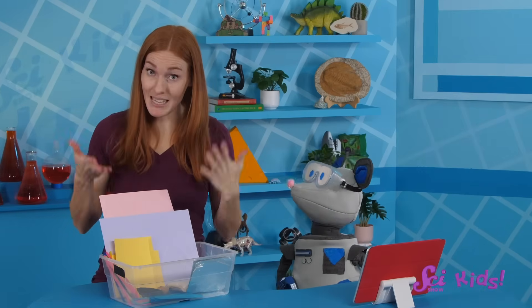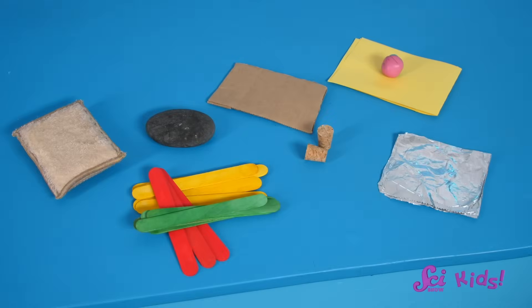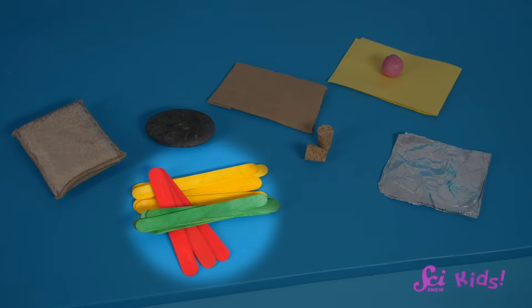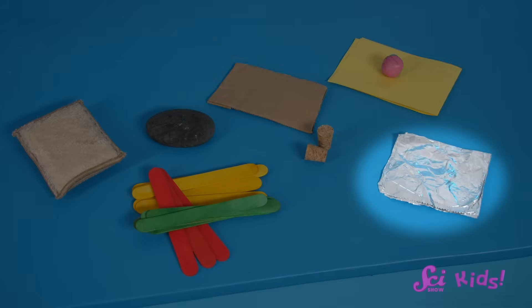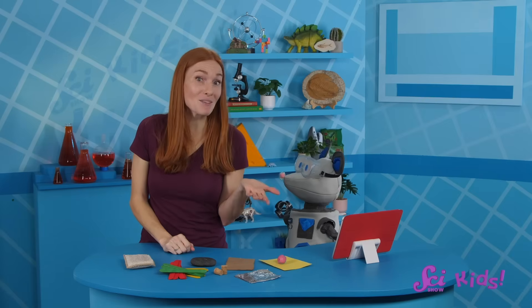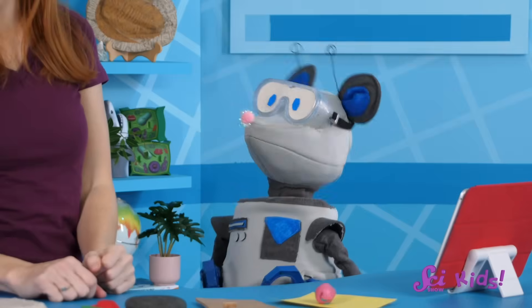Let's take a good look at our materials and then draw designs for our rafts. We have a kitchen sponge, some craft sticks, cardboard paper, a ball of modeling clay, some aluminum foil and corks, and a big flat rock. Let's think about these materials and how we could use them in our designs.